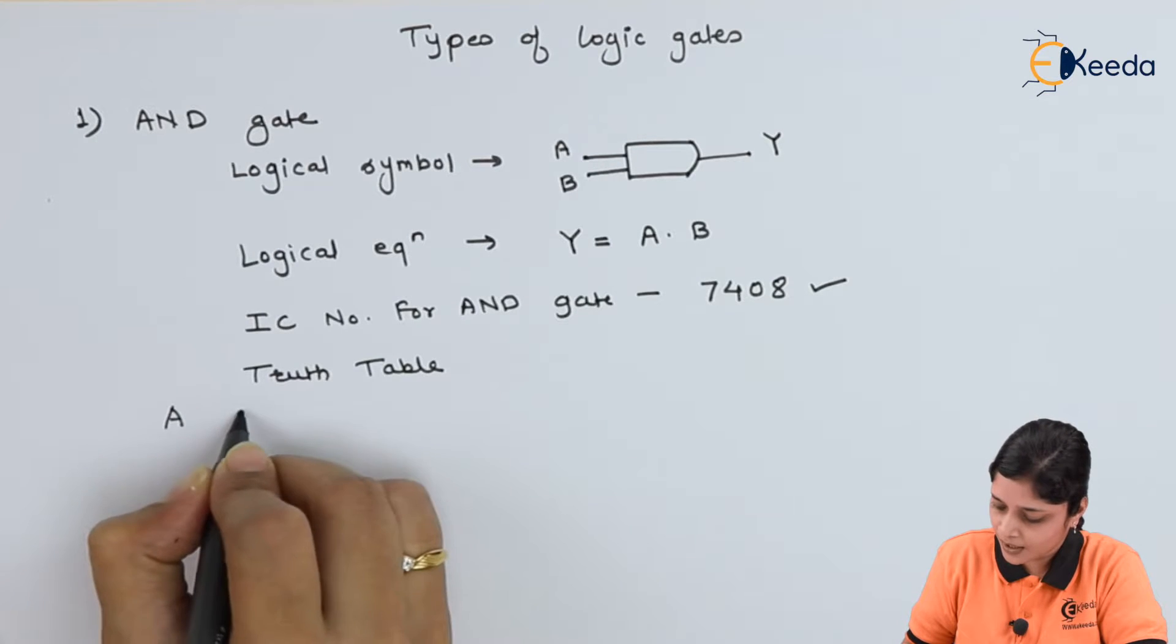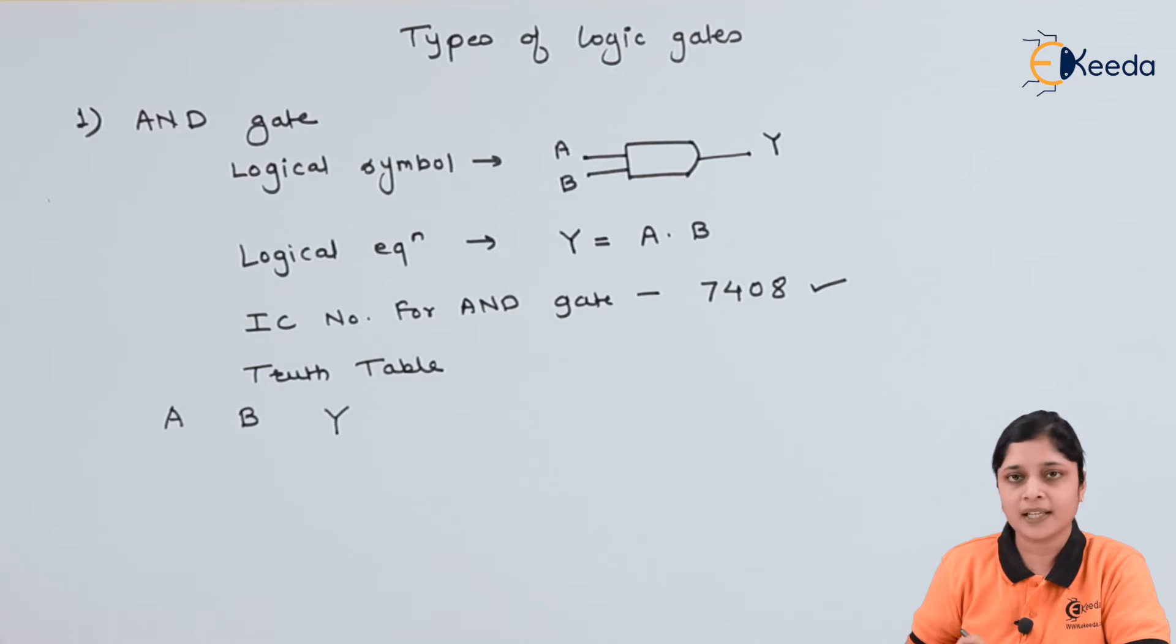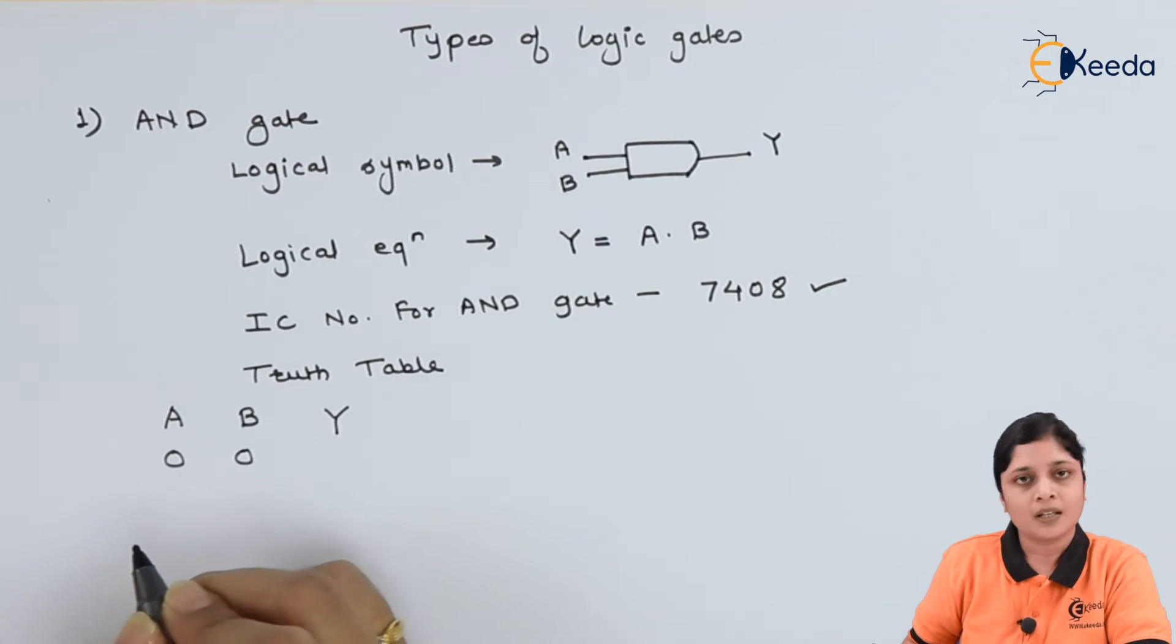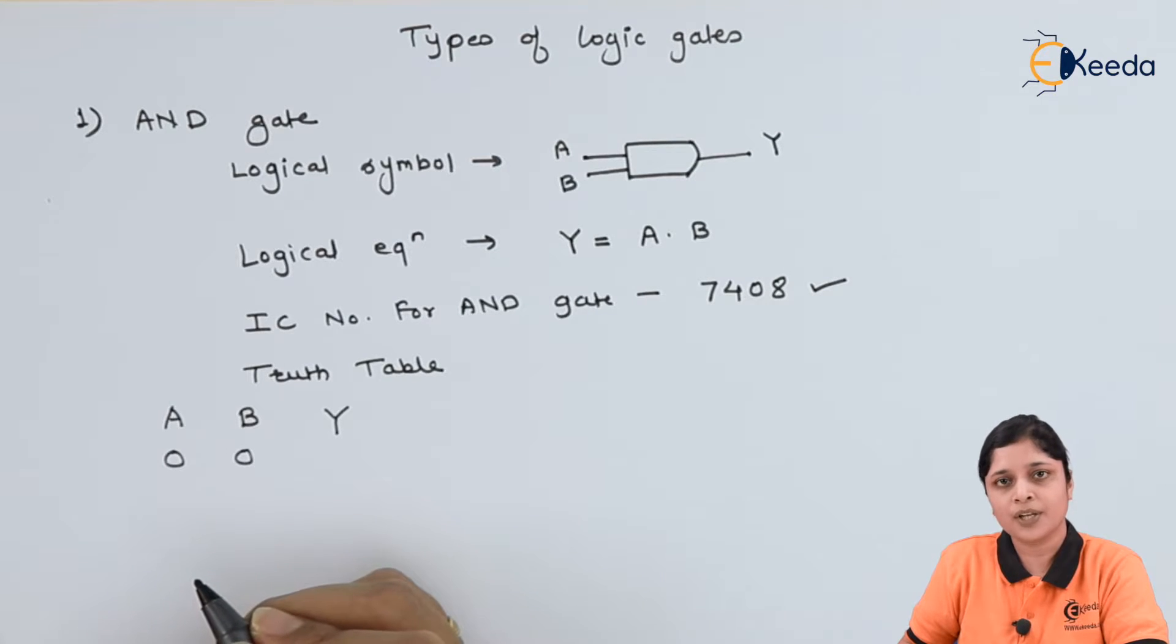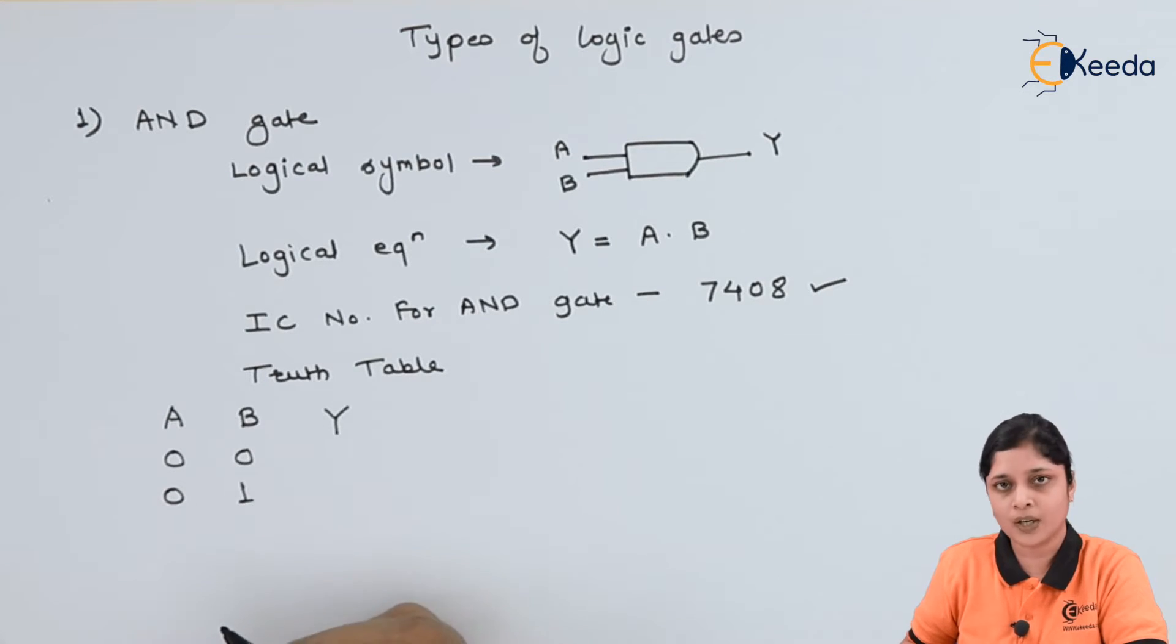We have A and B as two inputs. Output we will write as Y. So possible combinations are 0 0, in terms of binary only we have to write all possible combinations: 0 0, 0 1, 1 0 and 1 1. So 4 possible combinations we got here.